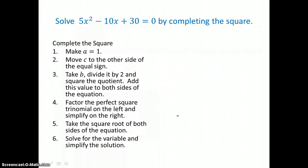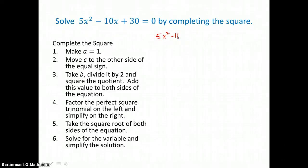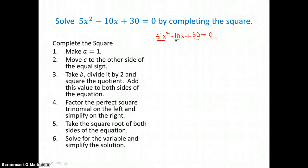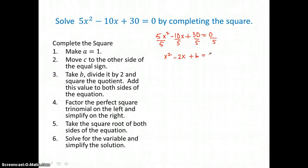In this next example, we're going to solve 5x squared minus 10x plus 30 equals 0, again by completing the square. This time, my a value is not 1, so in my first step I need to make sure that a equals 1. I'm going to divide both sides of this equation by 5, dividing every term by 5. The first term becomes x squared, the second term becomes negative 2x, the third term is 6, and 0 divided by 5 on the right is 0.